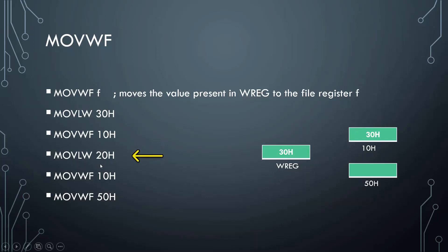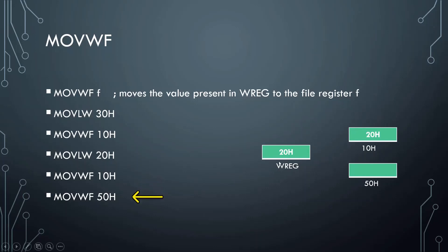MOVLW 20h — this instruction moves the value 20h to the working register. Then MOVWF 50h: the value present in WREG gets copied to the file register 50h. So file register 50h now contains the value 20h.